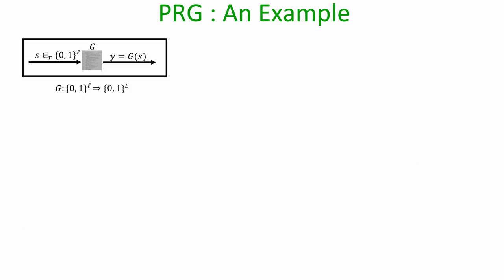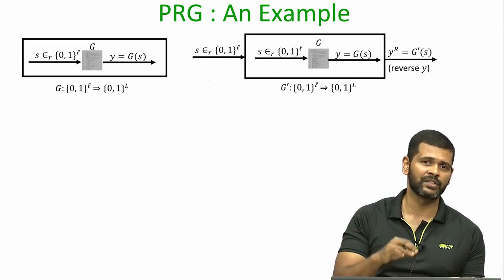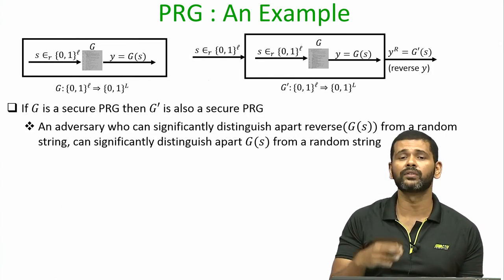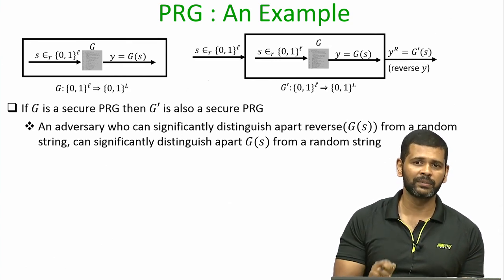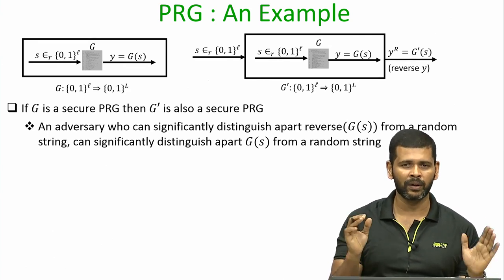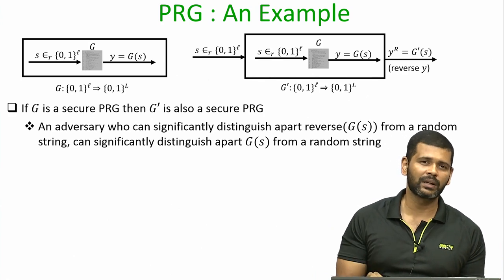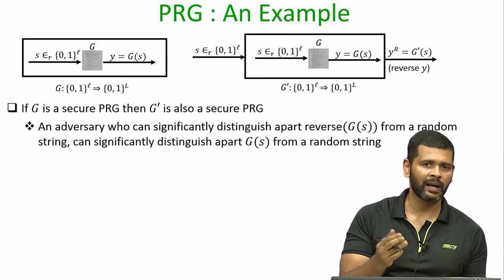Now consider another operation we can perform on a PRG to obtain a secure PRG. Given some arbitrary secure PRG G, we construct a new PRG G' where the output of G' is obtained by running G and simply reversing its output. The claim is that if G is a secure PRG then G' is also a secure PRG, proved by reduction.